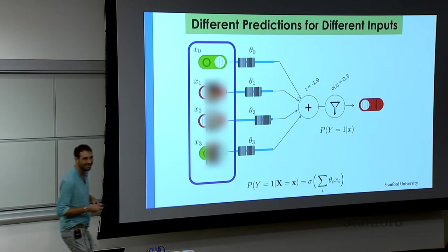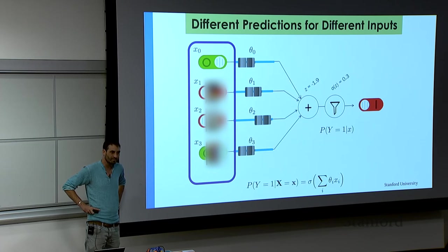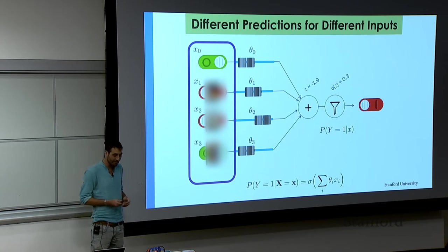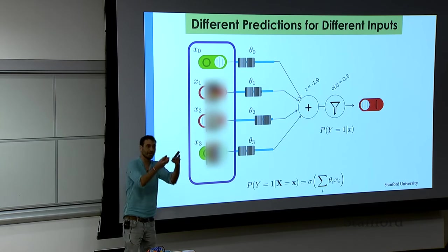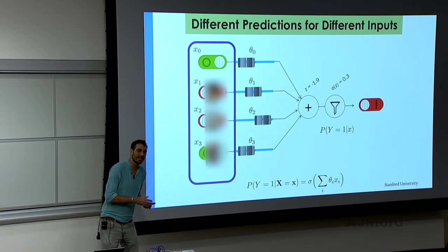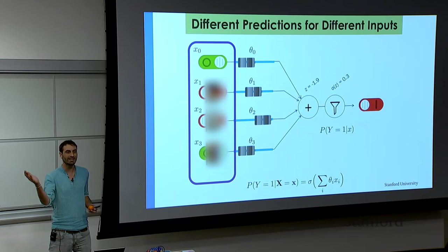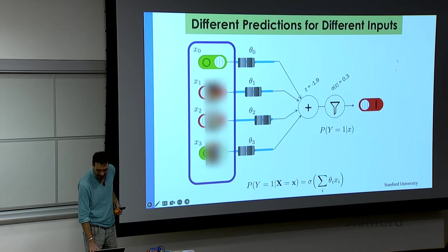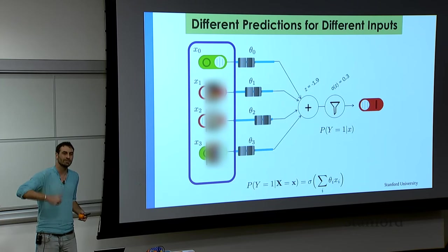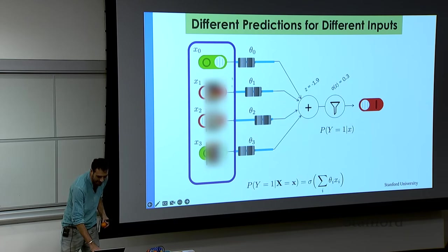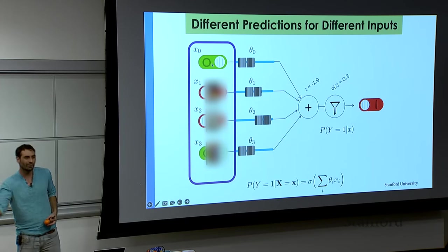Can we consider theta zero as a base case — so like if all the other things were zero, that would be the output? Yes, it is a bit of a base case. Another way to think about it: it kind of biases the machine to either predicting more people liking the movie, or not. Like if your output is a super popular movie, you might want to bias it so that you predict that people like this movie more often than not. Generally this can either make you more likely to predict one, or less likely.